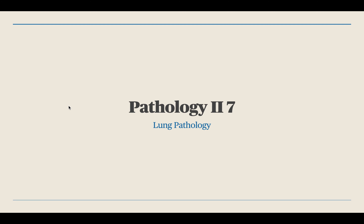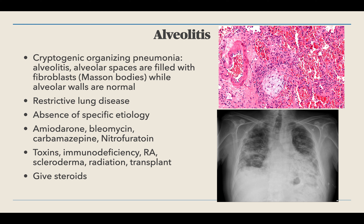Welcome back to lung pathology. We're going to start with alveolitis — this is a syndrome that's part of many different diseases. The first one we'll go through is cryptogenic organizing pneumonia, characterized by alveolitis where the alveolar spaces are filled with fibroblasts, also known as Masson bodies, while the alveolar walls remain normal.